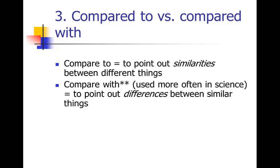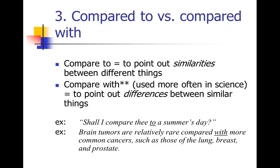In the sciences, we almost always actually want to use compared with. So compare with means that you're pointing out differences between similar things, which is usually what we're doing in the sciences, right? We have two groups of mice, we want to point out what's different between the two groups. So you're probably almost always going to use compared with. The example is shall I compare thee to a summer's day, but if you were doing something comparing tumors, for example, you're probably going to use compared with. Brain tumors are relatively rare compared with more common cancers such as those of the lung, breast, and prostate. Tumors and tumors are similar things, and we're trying to find differences in their frequency. So that's a compared with case.